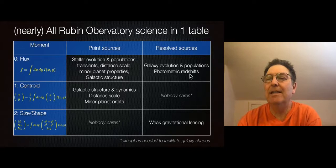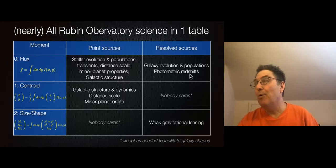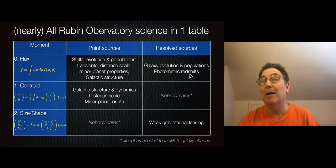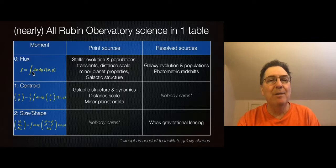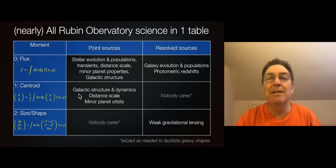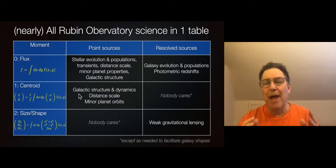For galaxies, we also want to measure fluxes of resolved sources to get total light and colors, which tell us about stellar populations and redshifts. The second row is positions — the centroids of the light received from objects. This is written as almost the same integral as flux, but with an X or Y inserted and normalized by the flux to get the center of light. For stars, this is what astrometry is: measuring position in the sky to great accuracy.